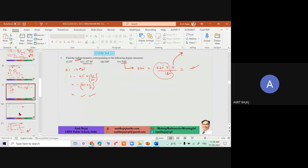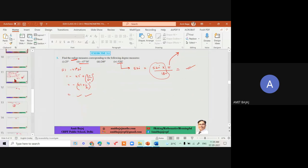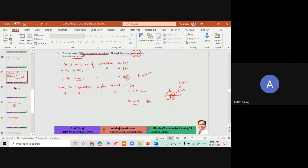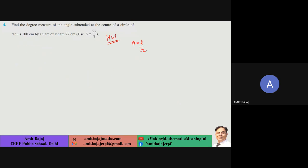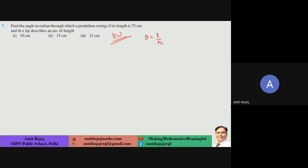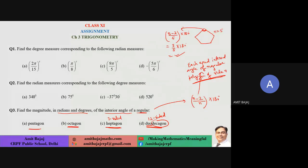Exercise 3.1 is very basic. Please check out the questions — these are one or two markers. Generally in MCQs they are one-mark questions where you can use common sense and don't need extensive explanation. Simple applications of theta = L/R were considered along with questions from the assignment.